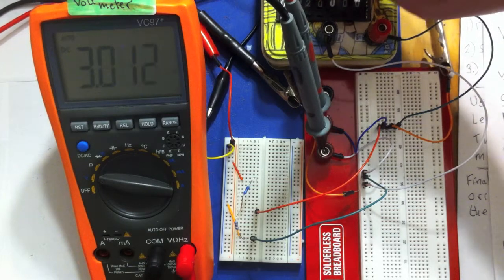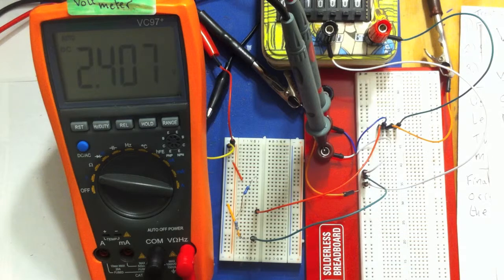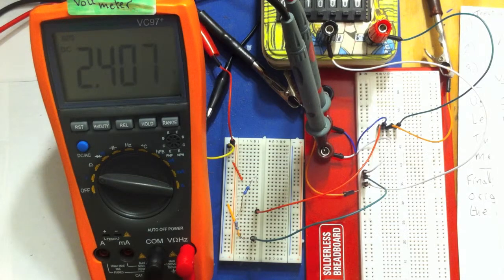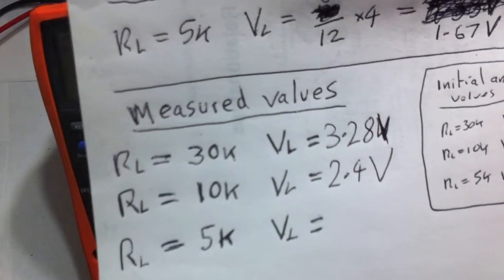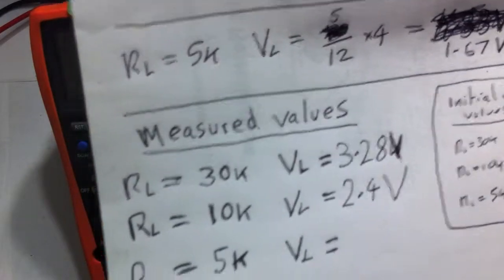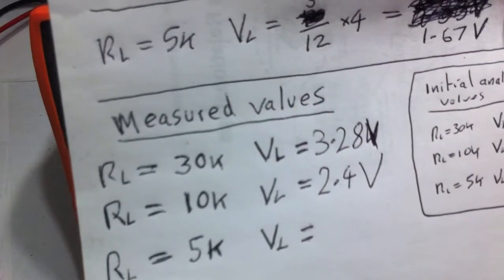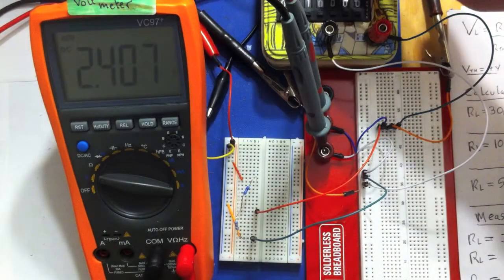Now we're going to change the decade box so that it's showing 10 and see what the voltage says for 10. And the voltage for 10 is showing 2.4. So let's write that down. 2.4 volts, not K. So the voltage there is 2.4 volts and the 30k one was 3.28 volts.